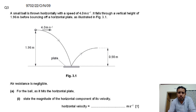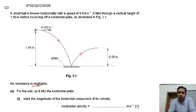There is a ball placed at a point. This ball starts moving horizontally as well as vertically. Initially its horizontal velocity is 4 m/s and it is at a certain height of 1.96 meters. Air resistance is negligible, meaning no horizontal force acts on it. The first thing is to get the horizontal velocity, which means the horizontal velocity is not going to change — it remains constant in projectile motion. So the horizontal velocity is 4 meters per second.